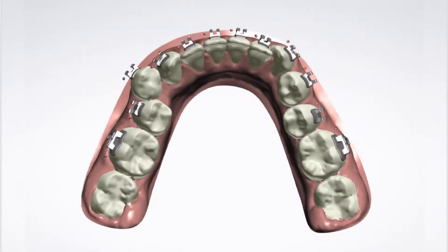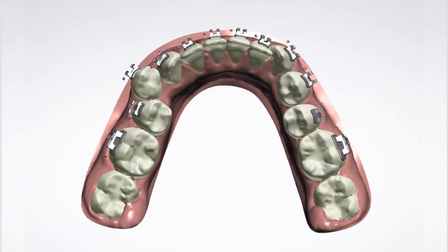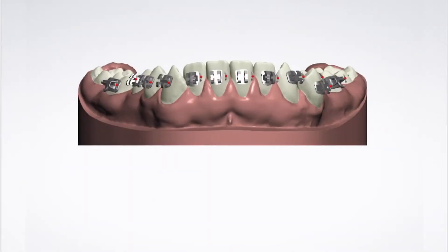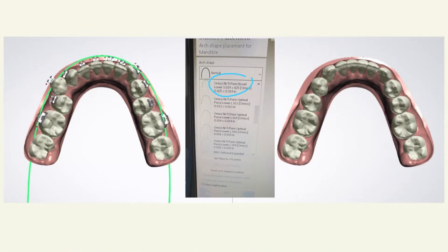The software used here was OrthoAnalyzer from 3Shape. When I connected remotely with the technician, we reviewed a couple of brackets — for example, one appeared a bit too distal on one tooth, and the canine was also placed more distal. I asked him to move it more mesial since it was too close and would not help with wire engagement. We confirmed the heights, mesiodistal positions, and long axis from different views, and made a couple of changes.